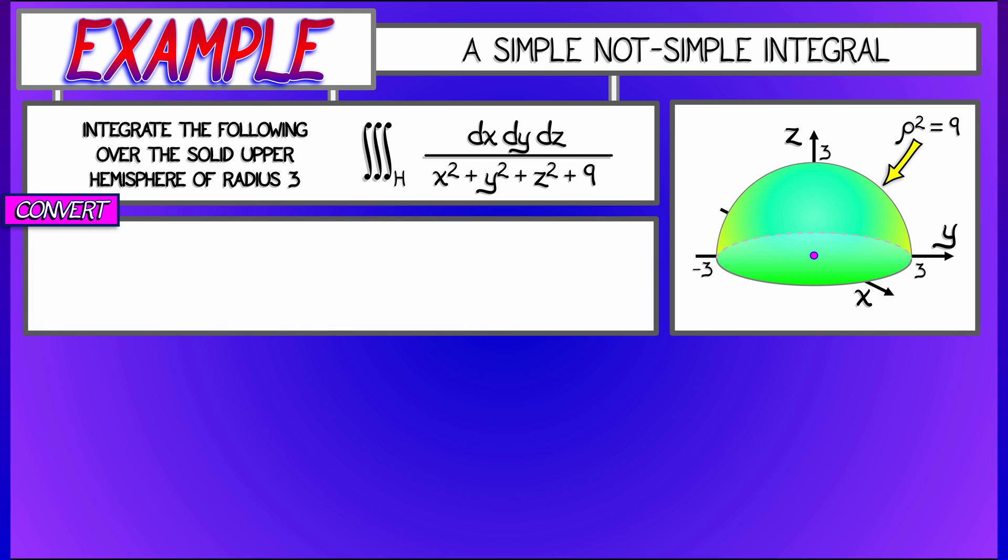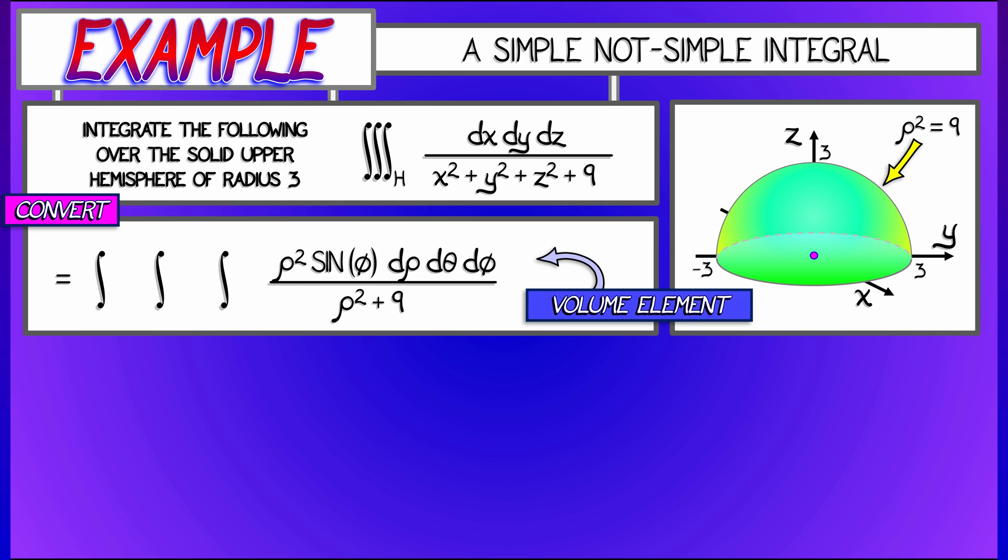So I can convert everything over to polar coordinates. I'm going to take the integral of 1 over rho squared plus 9, and then I've got the volume element, rho squared sine phi d rho d theta d phi. I set up the limits of integration, and they're going to be clean. Rho is going to go from 0 to 3, theta from 0 to 2 pi, and phi from 0 to pi over 2 to get that upper hemisphere.